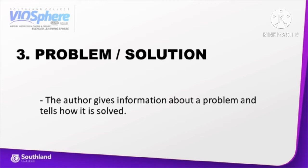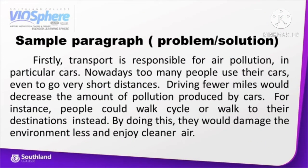Third example of type of text is problem and solution. The author gives information about the problem and tells how it is solved. Sample paragraph: Firstly, transport is responsible for air pollution, in particular cars. Nowadays, too many people use their cars, even to go very short distances. Driving fewer miles would decrease the amount of pollution produced by cars. For instance, people could walk, cycle, or use alternative transport to their destination instead. By doing this, they would damage the environment less and enjoy cleaner air.